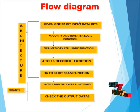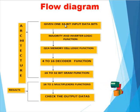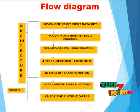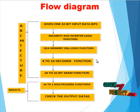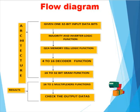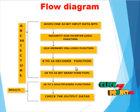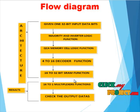This is the flow diagram of our product. Our architecture consists of six functions. First, the input data is fed — that data is 32-bit data — into the majority and inverter logic function. The output of the majority and inverter logic is fed into the QCA memory cell logic function. The output of the memory is fed into the 4-to-16 decoder function. The output of the decoder function is fed into the 32-bit SRAM function.